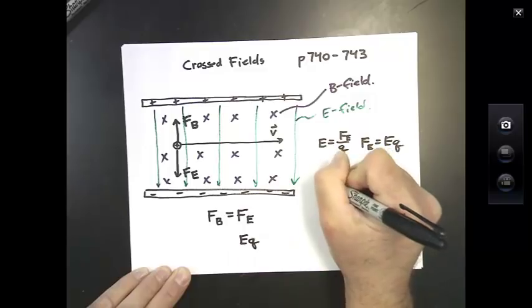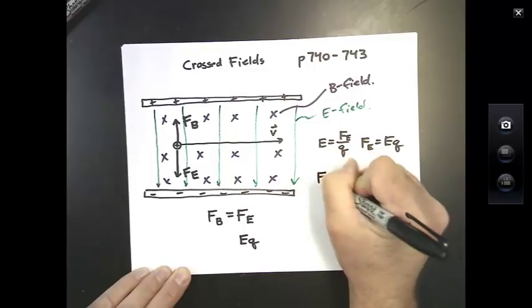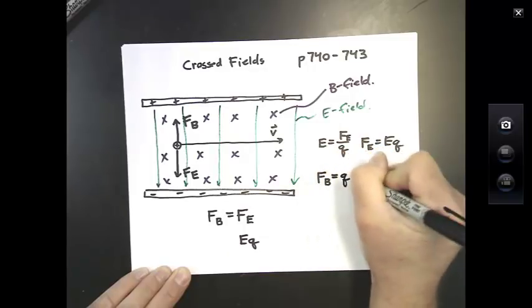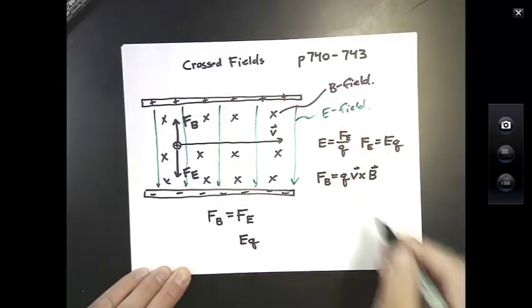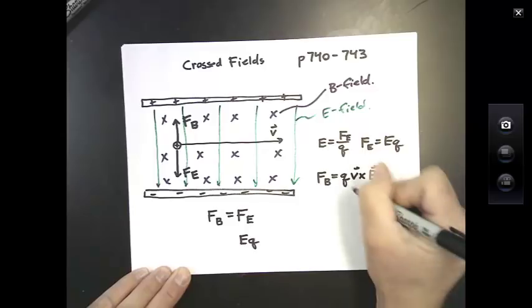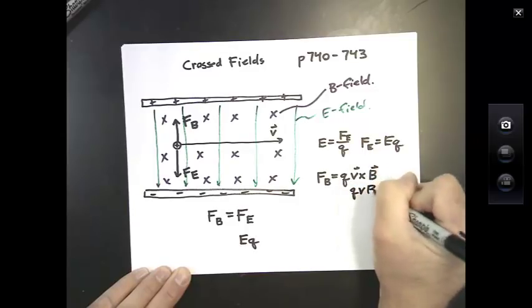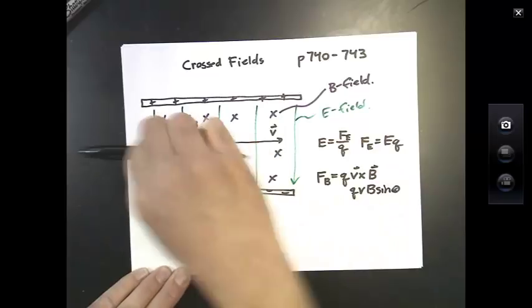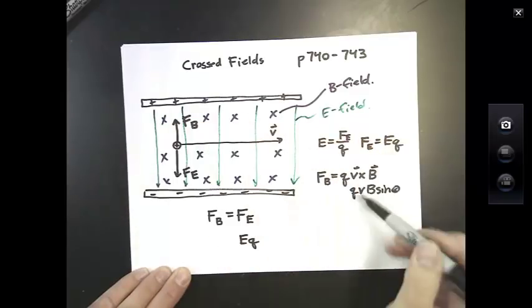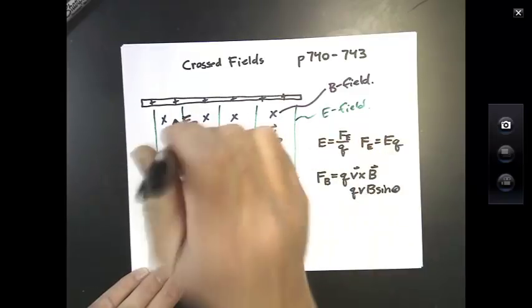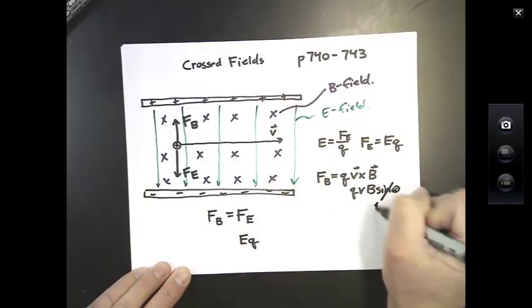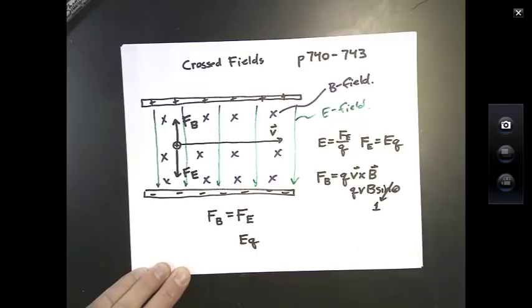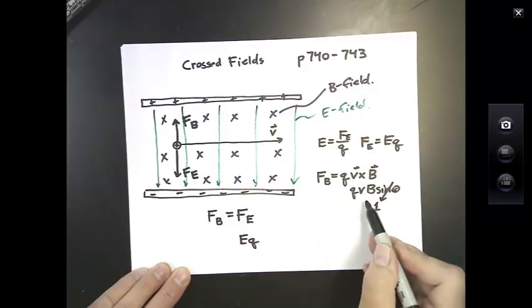Magnetic fields create a force which is QV cross B. The cross product is QVB sine theta, but the direction of the particle's velocity V and the magnetic field in this case are perpendicular. So we can lose the sine of theta and say sine of 90 degrees is 1. So the force due to the B field is QVB.